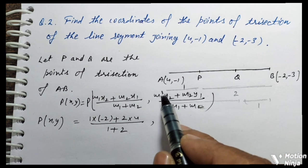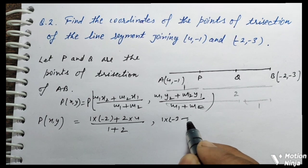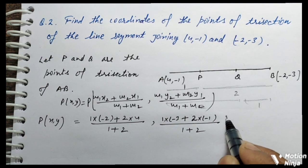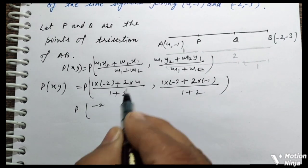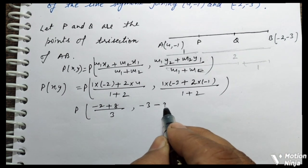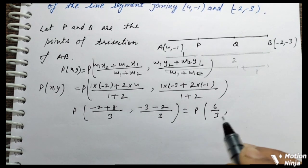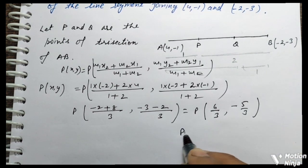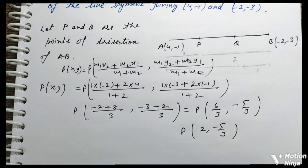Y-coordinate of P: (M1·y2 + M2·y1) / (M1 + M2) = (1 × (-3) + 2 × (-1)) / (1 + 2) = (-3 + (-2)) / 3 = -5/3। x-coordinate: 6/3 = 2। So P के coordinates हैं: (2, -5/3). एक coordinate मिल गया, अब दूसरे के लिए।